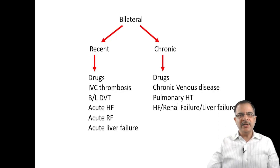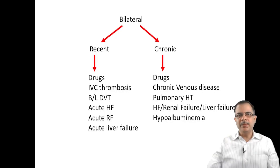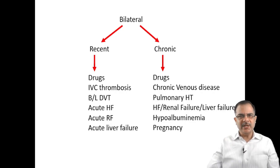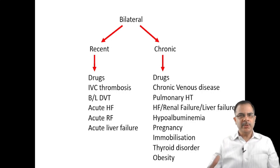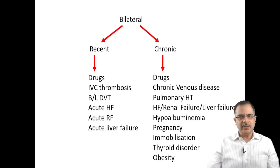Chronic bilateral swelling can be due to drug intake, chronic venous diseases, pulmonary hypertension, heart failure, renal failure, liver failure, hypoalbuminemia, malnutrition, pregnancy (which compresses the inferior vena cava), immobilization, thyroid disorders, or obesity — where fat compresses the iliac veins or inferior vena cava — leading to bilateral swelling.